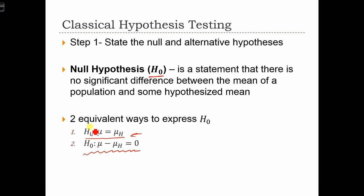But let's focus over here. What this is saying is that the null hypothesis is that mu, the population mean, that's mu, equals some hypothesized mean, mu sub h.